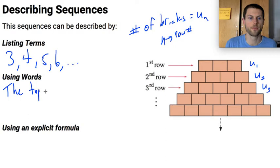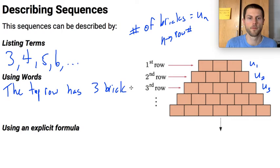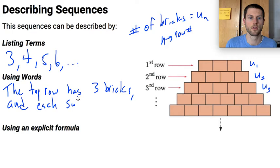We could use words and we could say that the top row has 3 bricks and each subsequent row has 1 more brick than the last.